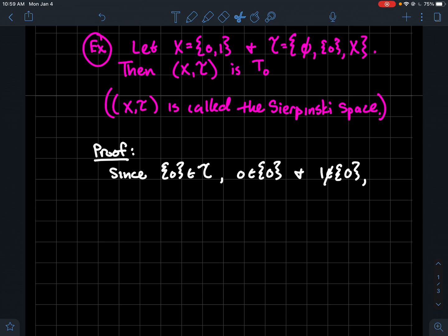But then what else is kind of cool? Well, 1 is not contained in that neighborhood of 0. So what have we done? Well, I found a neighborhood of 0 that doesn't contain 1. Therefore, we're able to separate our points in that way.